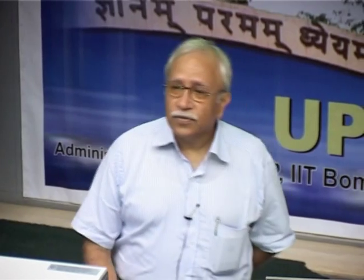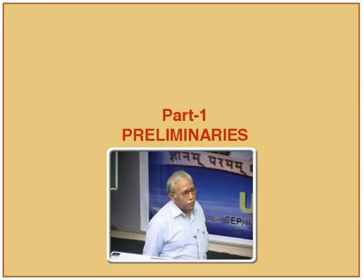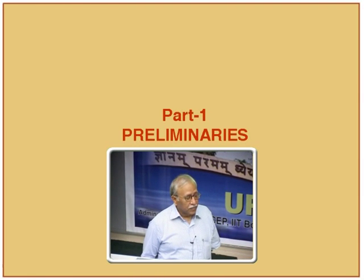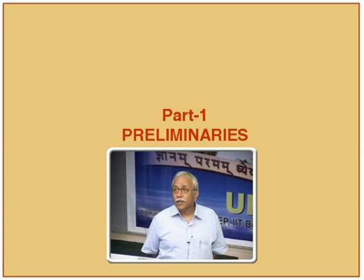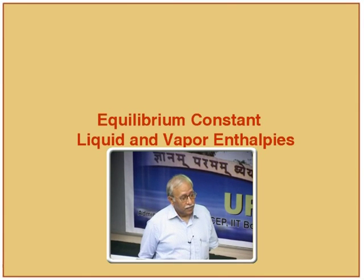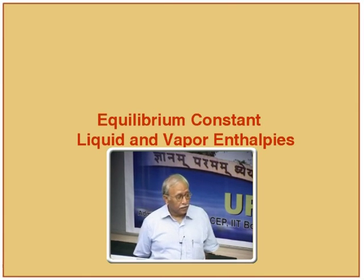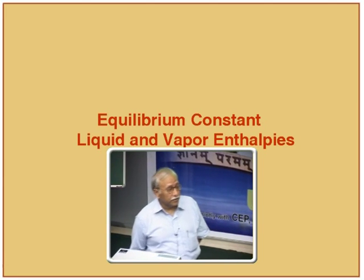I have divided this talk into three parts. Part 1, which I am calling preliminaries, covers a quick revision of definitions of items such as the equilibrium constant, and how we normally calculate liquid and vapor enthalpies. These two properties — the equilibrium constant and the enthalpies — are required for material and energy balance calculations.